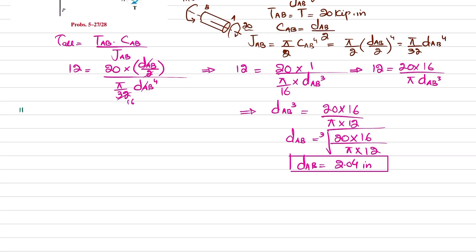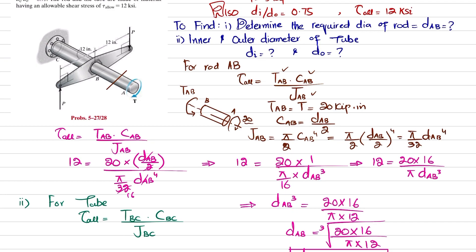Now we find the inner and outer diameter of the tube. For the tube, the allowable shear stress equals T_BC · c_BC (outer radius) divided by J_BC. To find the torque in tube BC, cut the tube and examine the free body diagram. You can see torque T (clockwise), plus P times the perpendicular distance of 12 inches, and another 12·P — both producing clockwise torque.